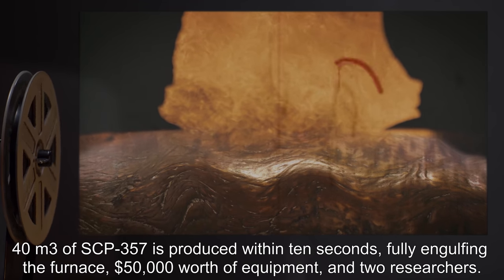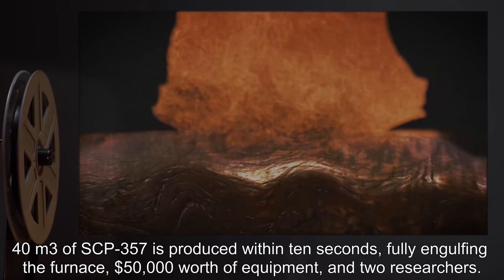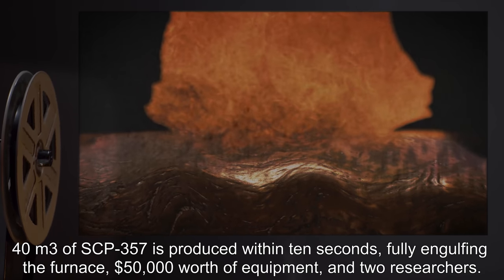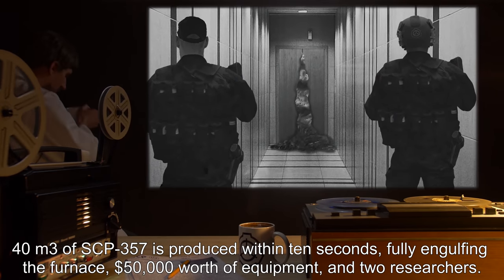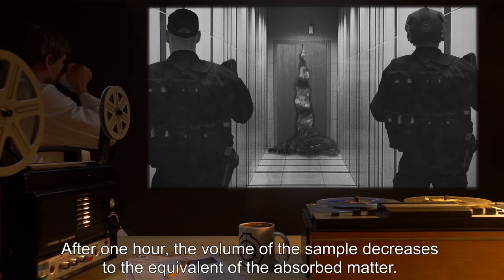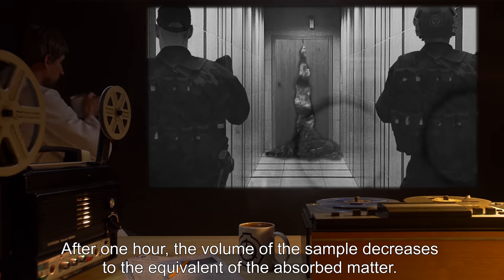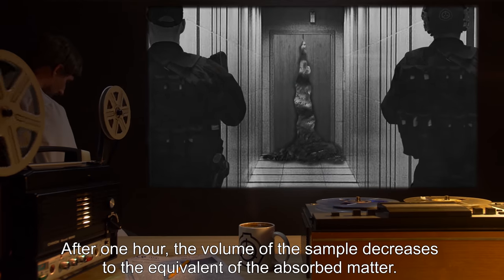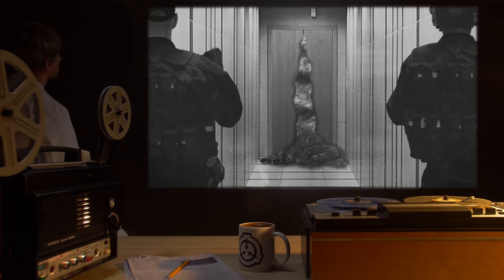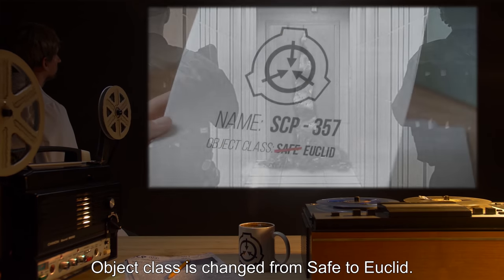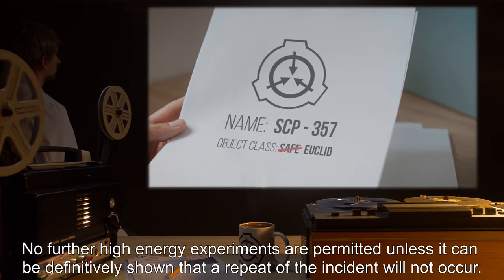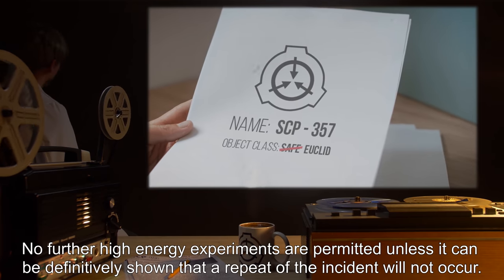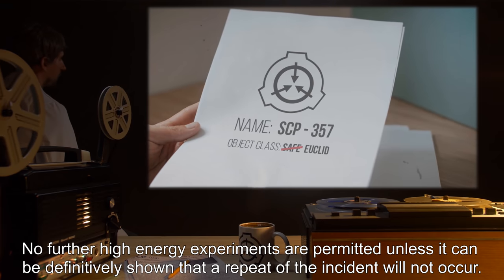Forty meters cubed of SCP-357 is produced within ten seconds, fully engulfing the furnace, $50,000 worth of equipment, and two researchers. After one hour, the volume of the sample decreases to the equivalent of the absorbed matter. Object class is changed from safe to Euclid. No further high-energy experiments are permitted unless it can be definitively shown that a repeat of the incident will not occur.